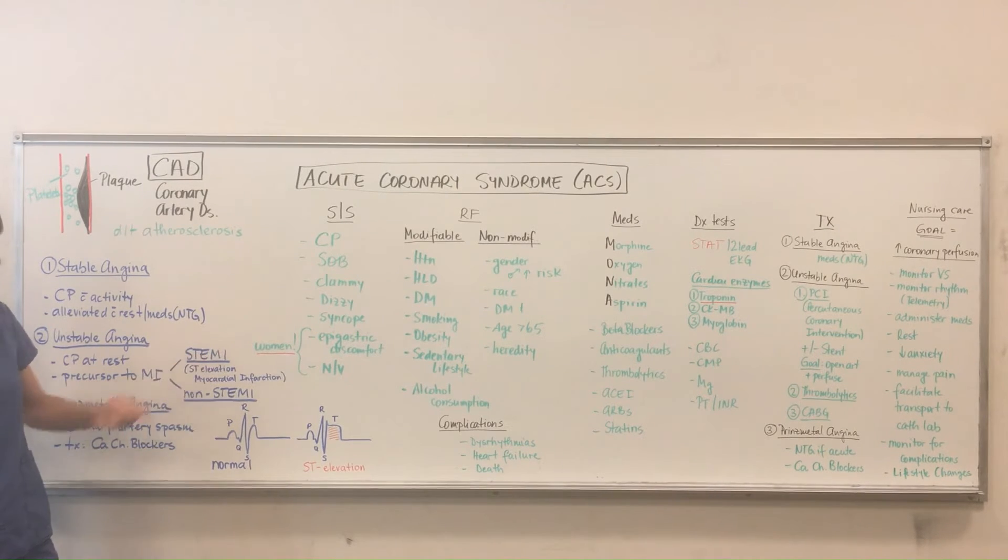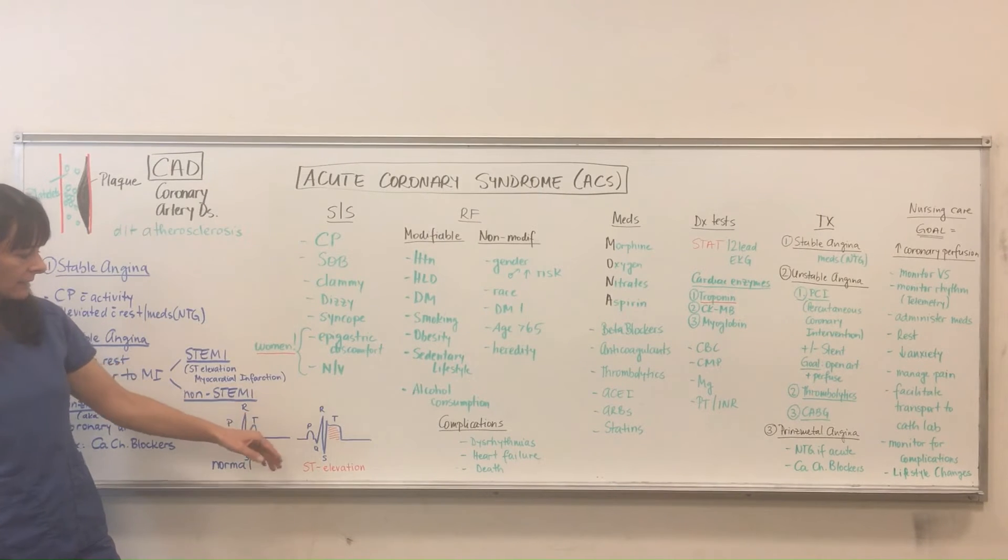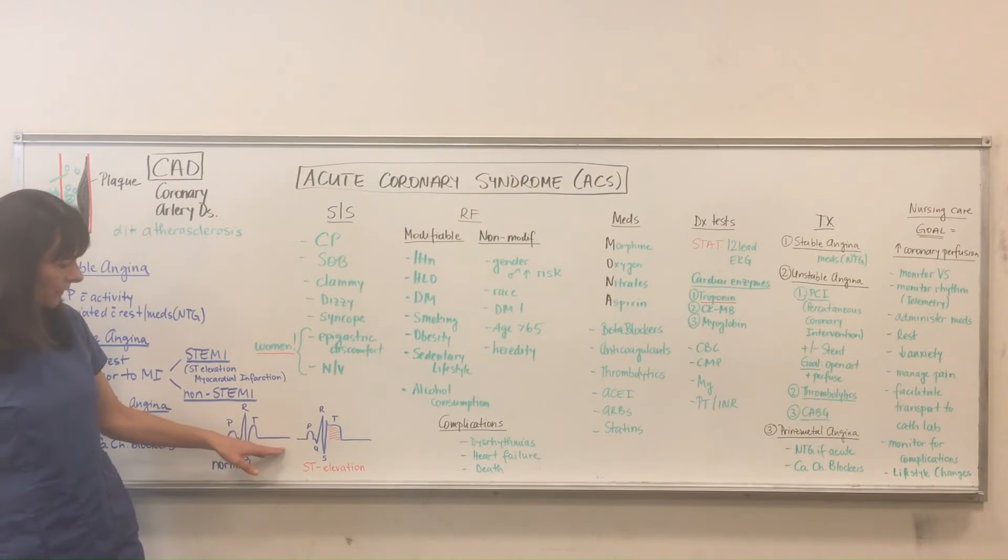When there's an ST elevation MI, that means that the ST segment is elevated. I've drawn that out here. It again starts at this baseline and ends at the baseline. We have the P, Q, R, S, T. But as you see, this ST here is elevated.